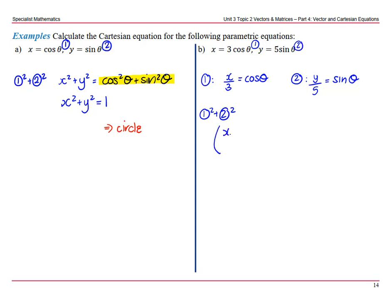we're going to have x over 3 all squared plus y over 5 all squared equals cos squared theta plus sin squared theta. Again, we have our trig identity, so x squared over 9 plus y squared over 25 equals 1. Now this is an ellipse.